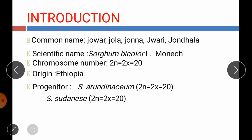The common name of sorghum is Jawar, Jola, Jona. In our state, we call it Jauri or Jondra. The scientific name is Sorghum bicolor and chromosome number is 2n equal to 20.